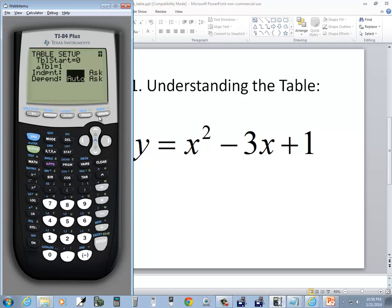So let's go to graph now. So I do second graph. And this is like one big T chart. For example, if I put 3 in for x, 3 squared is 9 minus 3 times 3 is 9. So you got 9 minus 9 is 0 plus 1 is 1. So that gives you your y value.